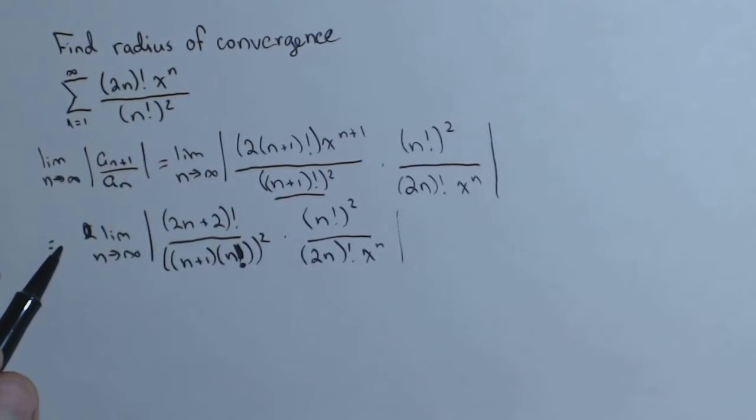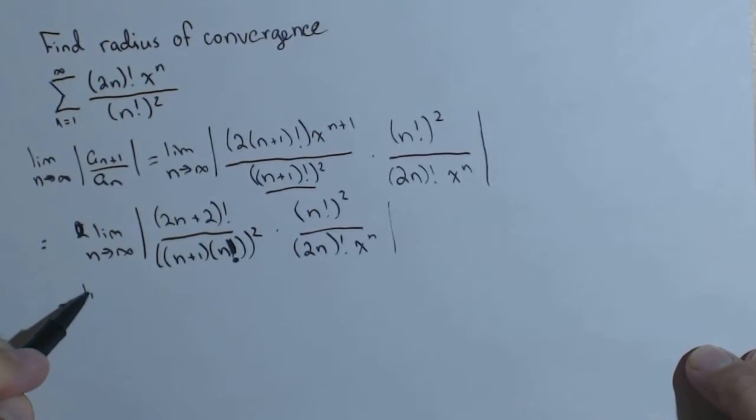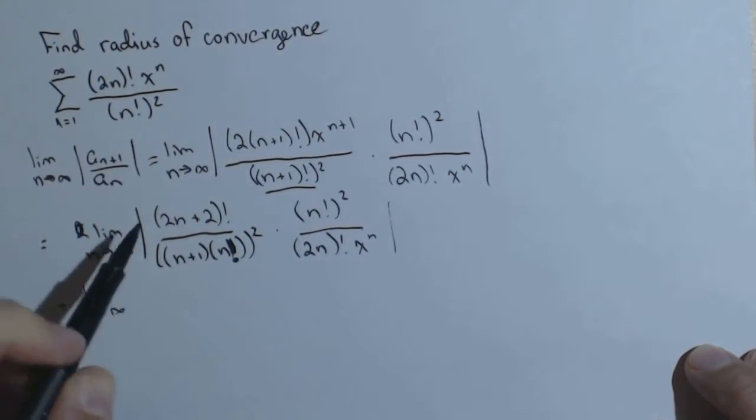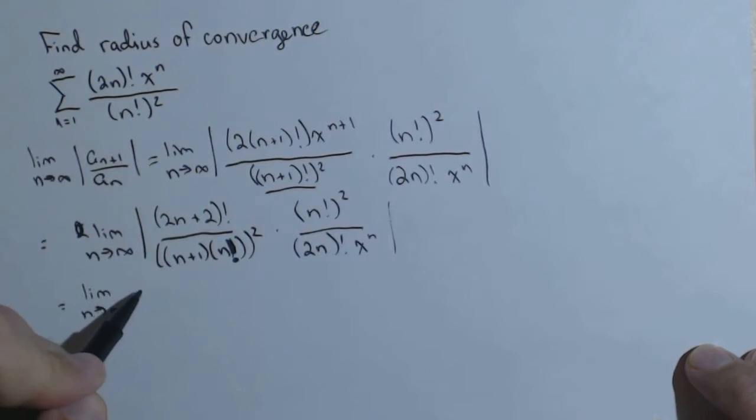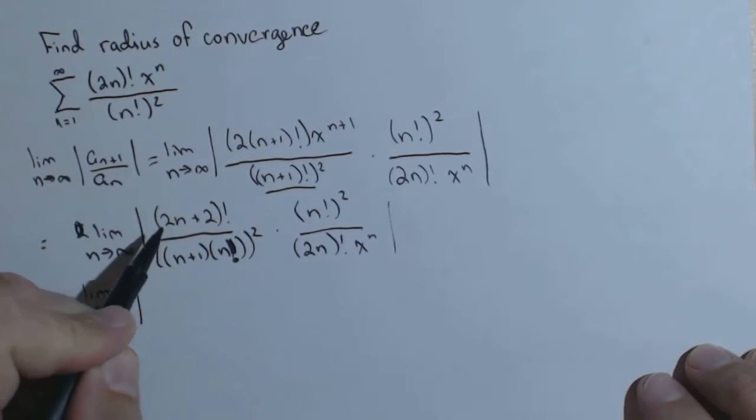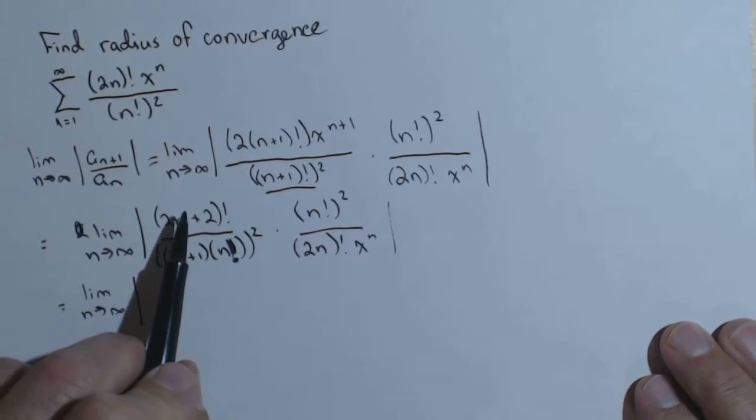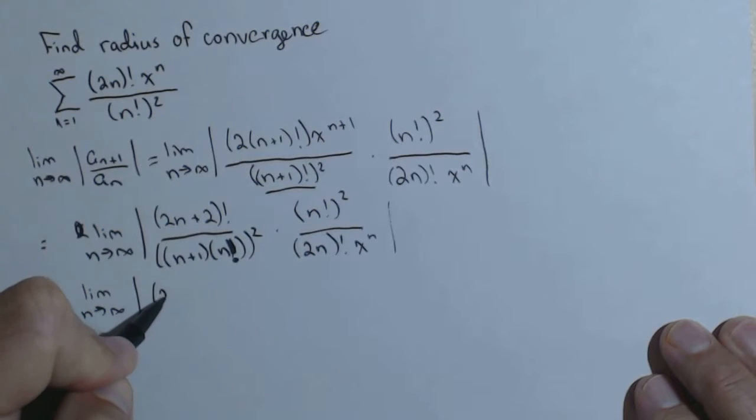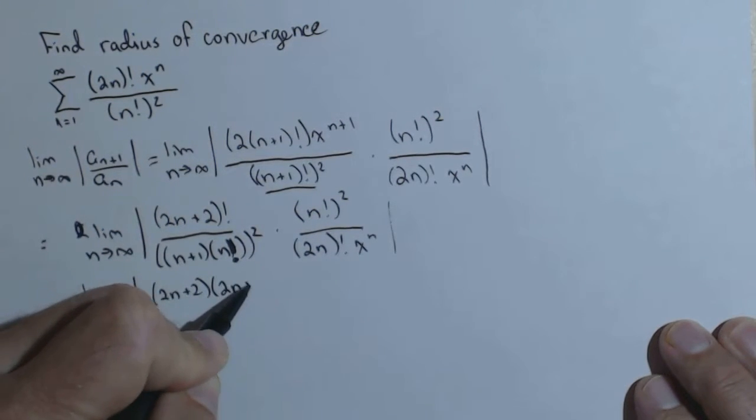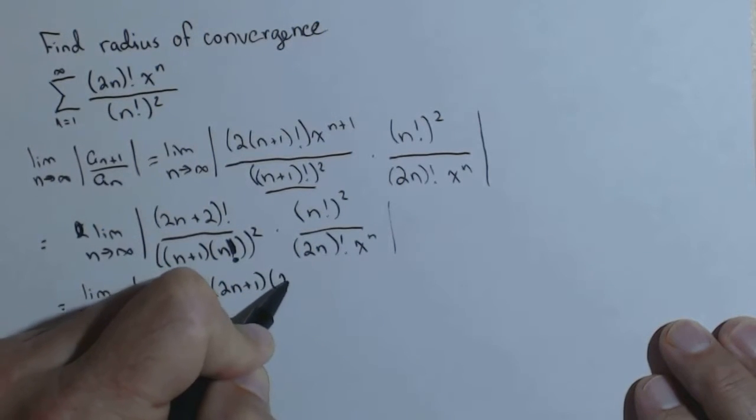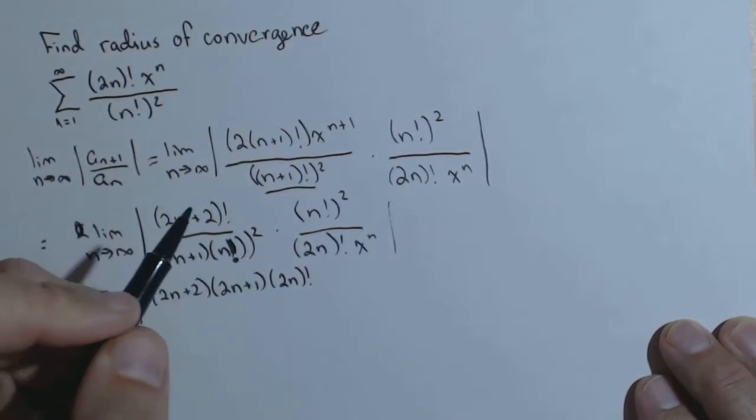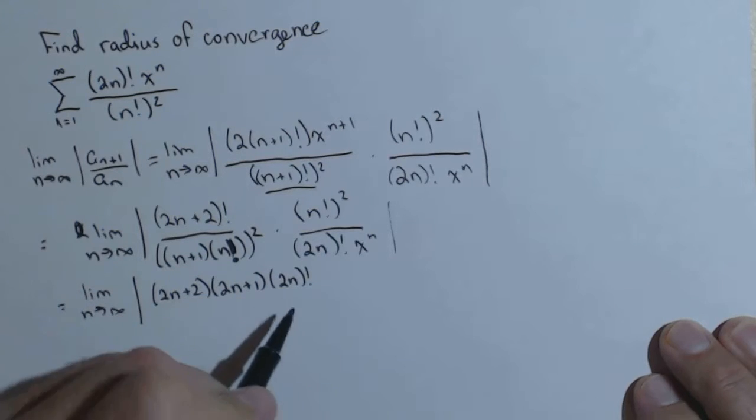Now, let's start to see what kind of expansions and canceling we can do. So with factorials, what we're going to want to do is write those out as much as possible, or at least until we see a cancel. So, 2n plus 2 factorial is 2n plus 2 times 2n plus 1 times 2n factorial. Now we see that our cancel there.